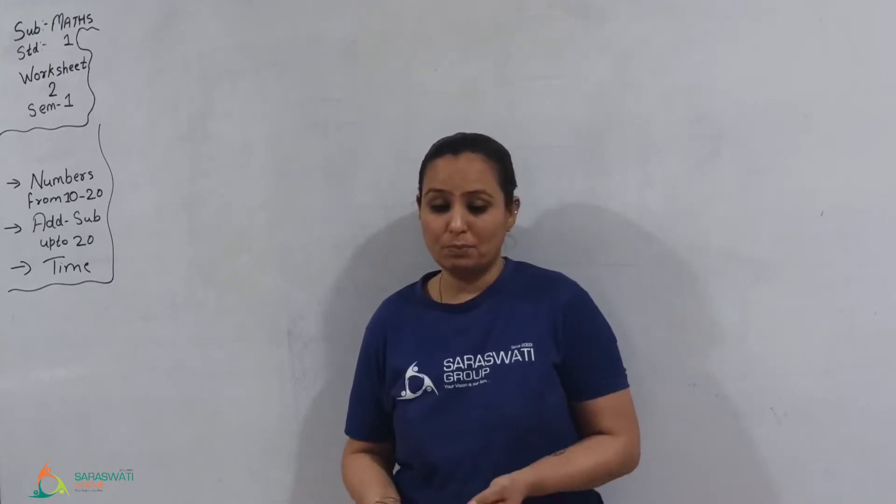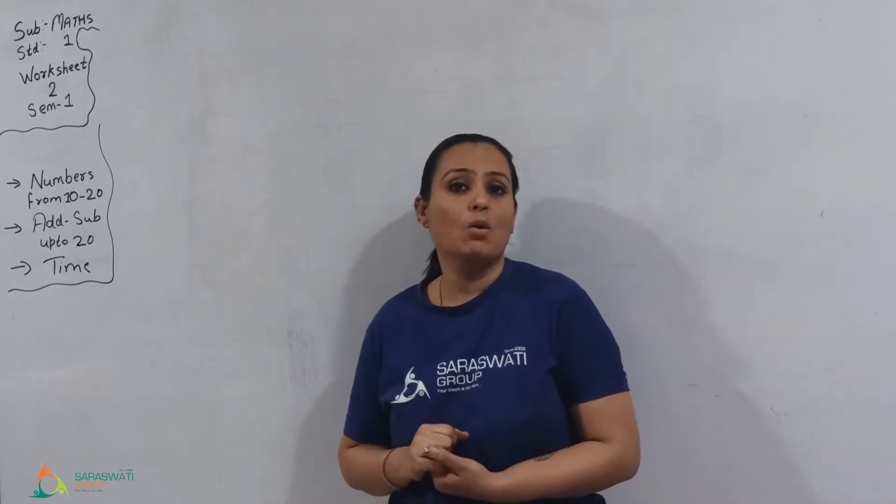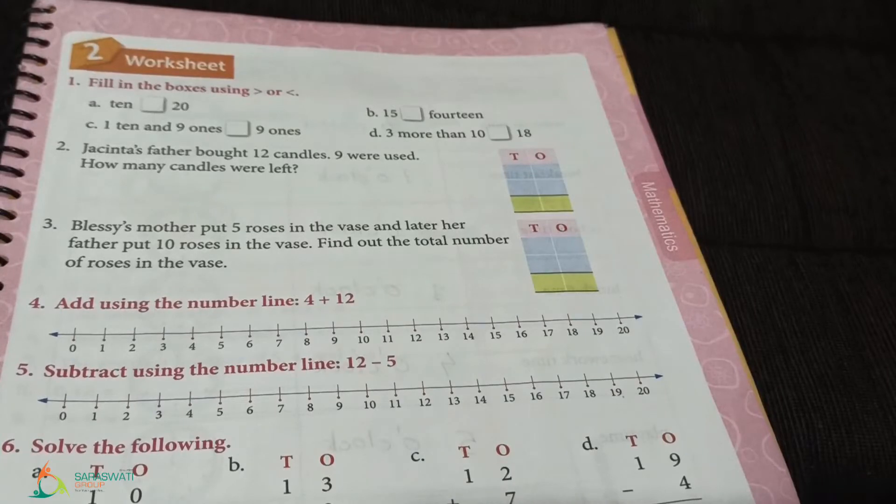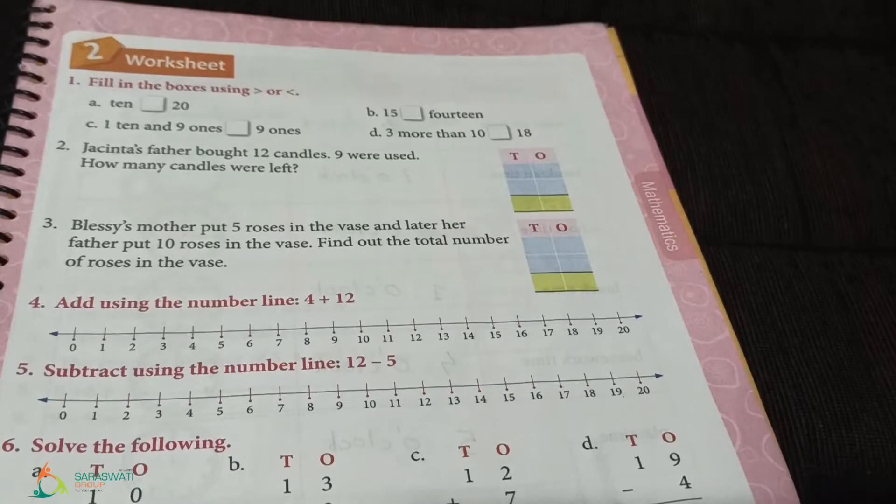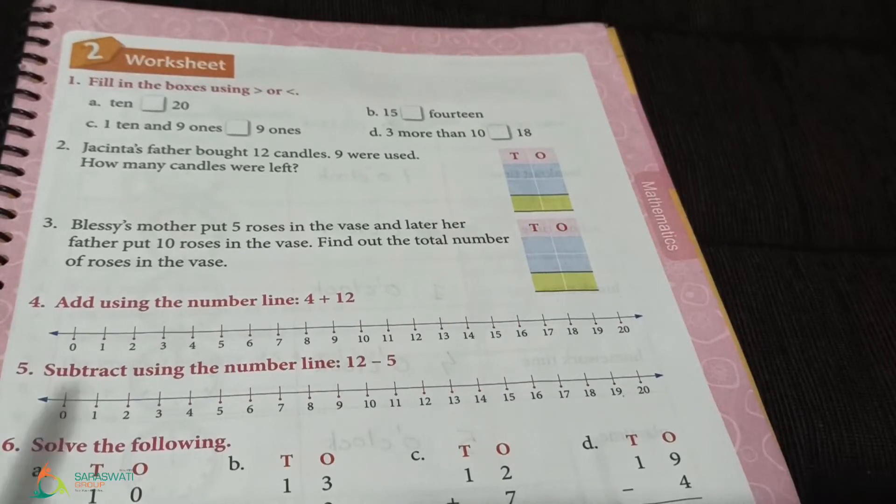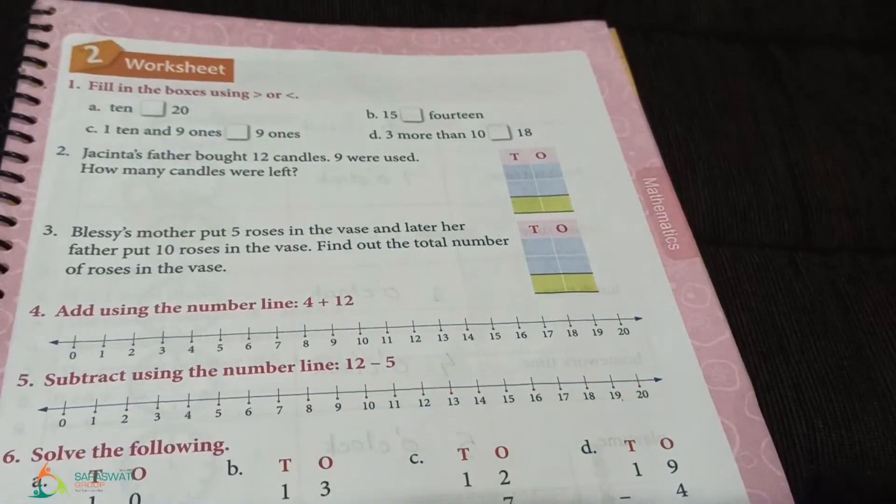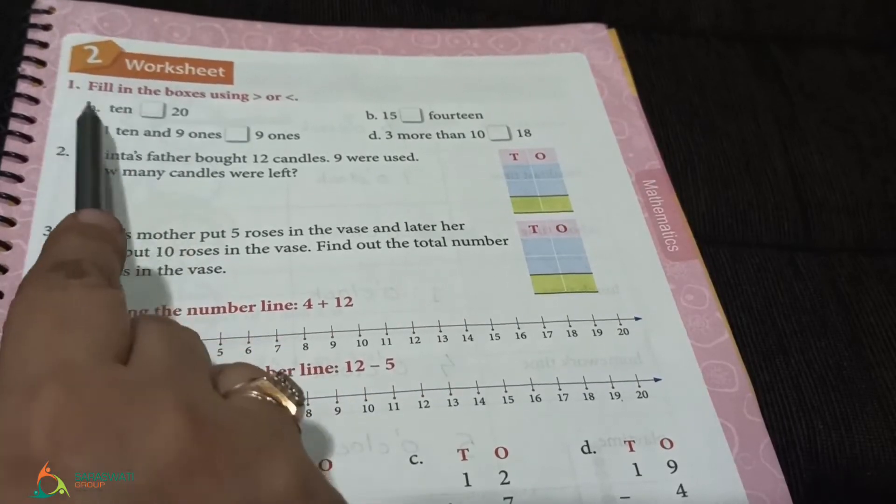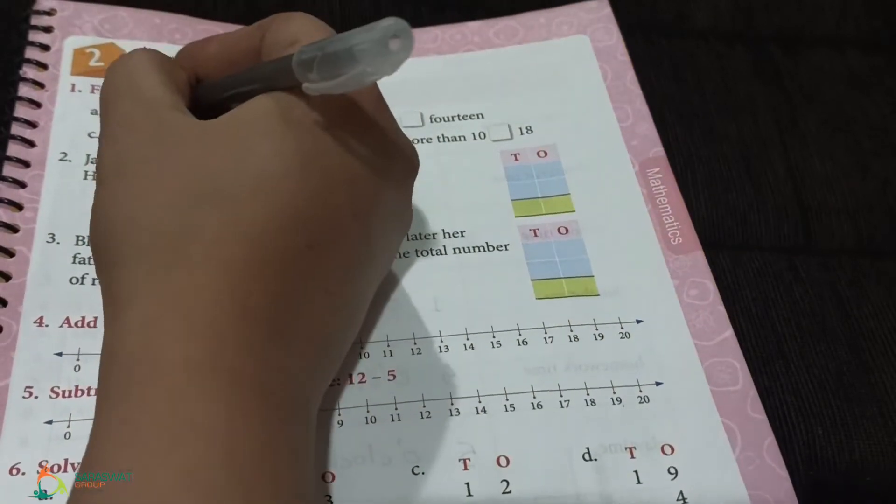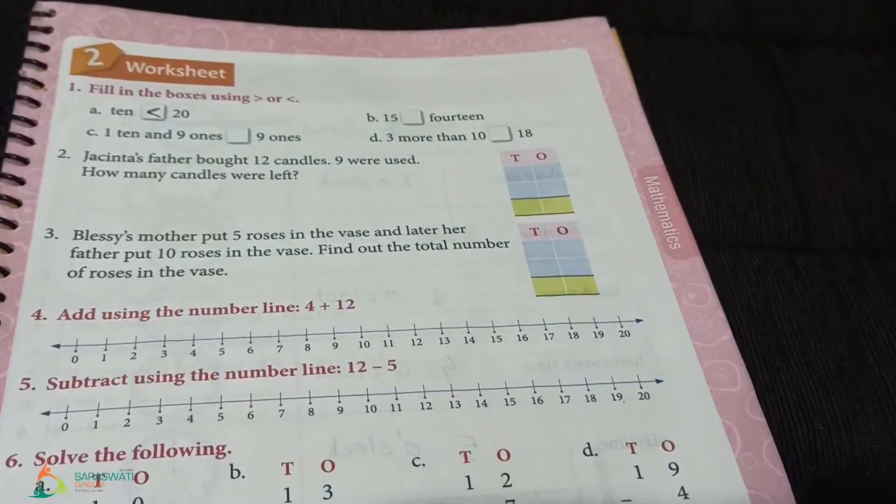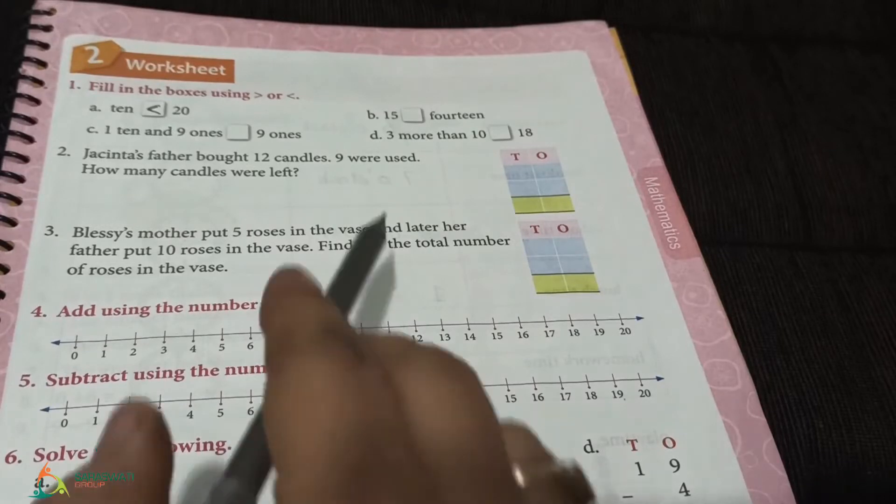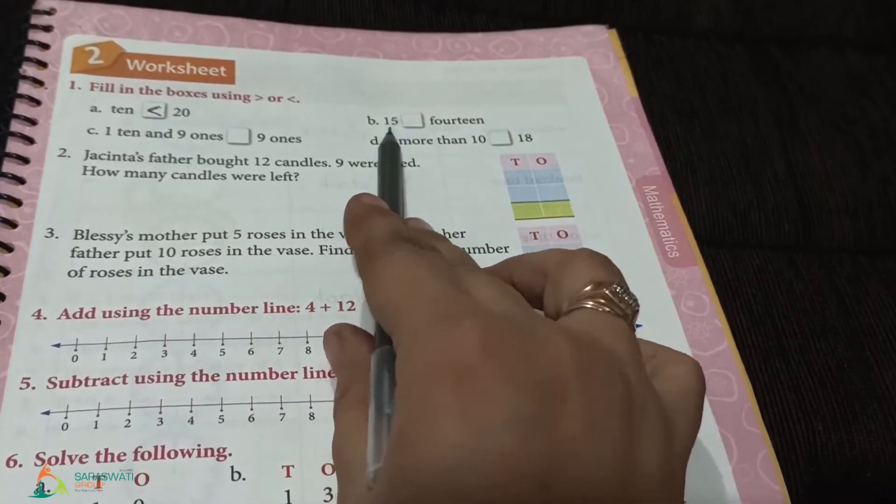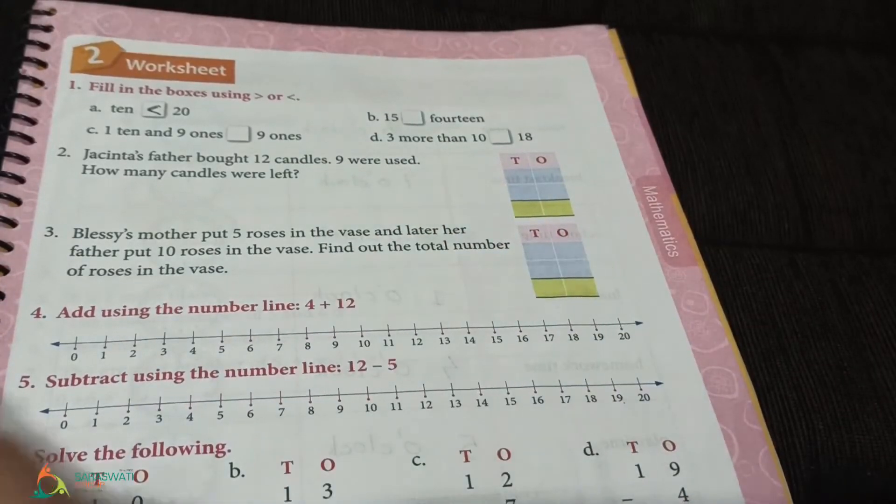Children, I request you all to please open your book, worksheet number 2 in SAM 1. Now, worksheet 2 on page number 151. The first question is, fill in the box using greater than or less than sign. 15 dash F-O-U-R-T-E-E-N, which is 14. 15 is greater than 14, so we will put the greater than sign.